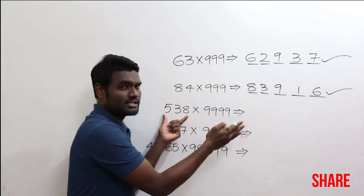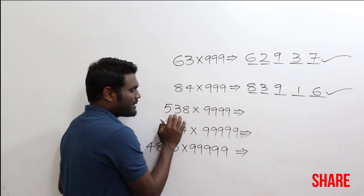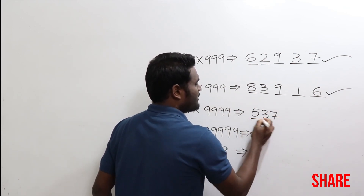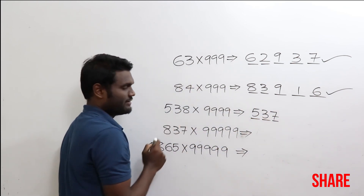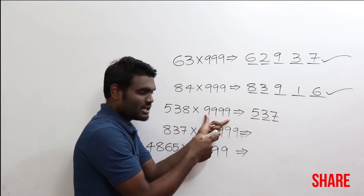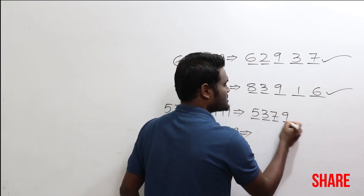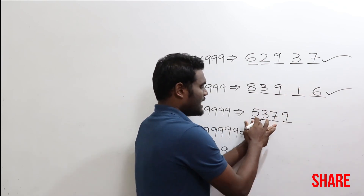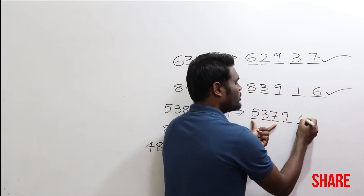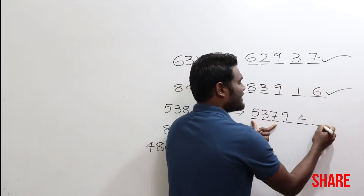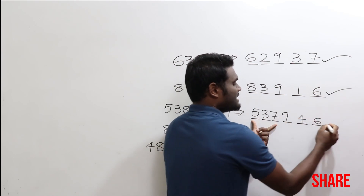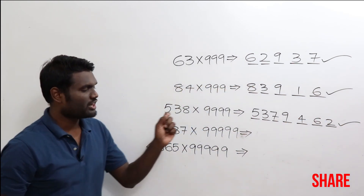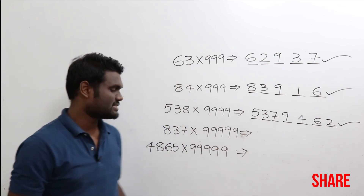Now 538 times 9999 — three digits and four nines, so one nine extra. Subtract one: 538 minus 1 is 537. Write that extra nine. Then for three more digits: for 5, add 4; for 3, add 6; for 7, add 2. So the answer is 5379462.